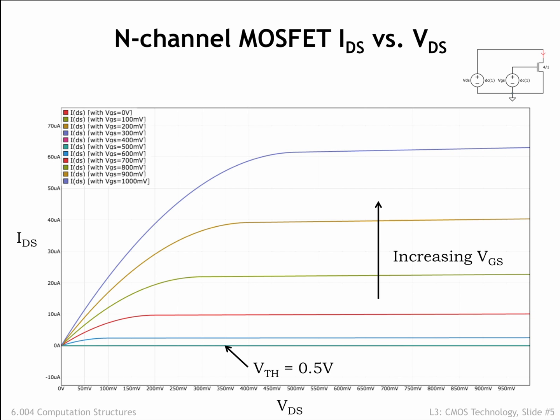When VDS is smaller than VGS, the MOSFET behaves like a resistor obeying Ohm's law. This is shown in the linear portions of the IDS curves at the left side of the plots. The slope of the linear part of the curve is essentially inversely proportional to the resistance of the conducting MOSFET channel. As the channel gets thicker with increasing VGS, more current flows and the slope of the line gets steeper, indicating a smaller channel resistance.